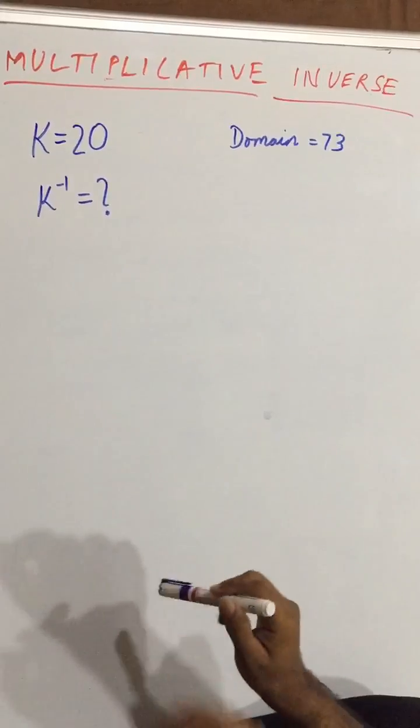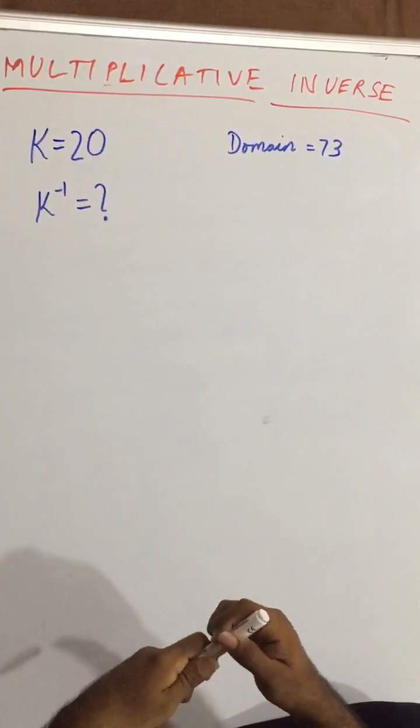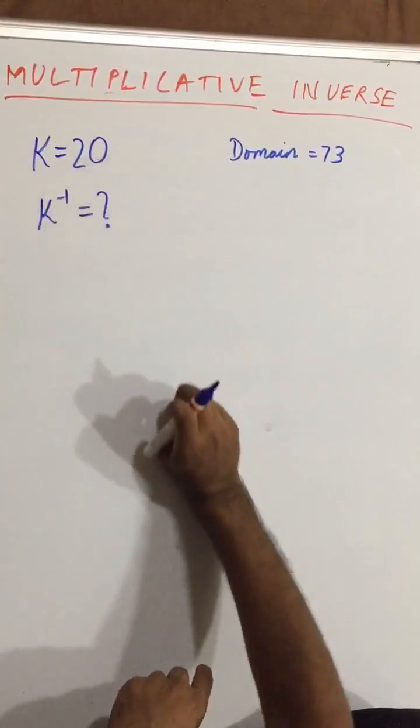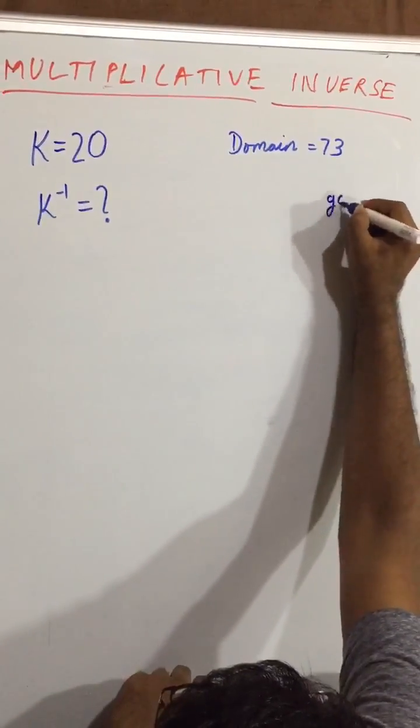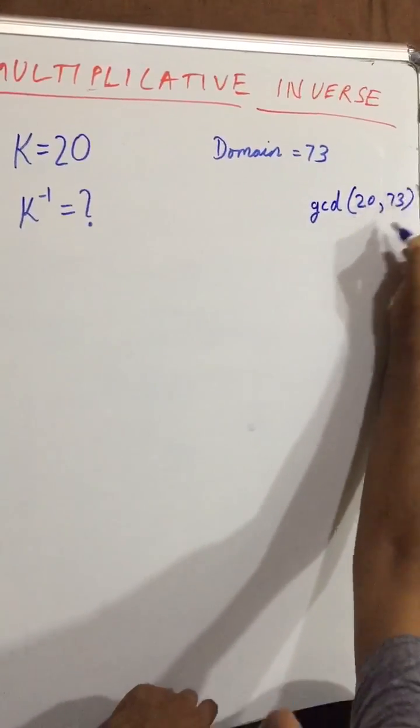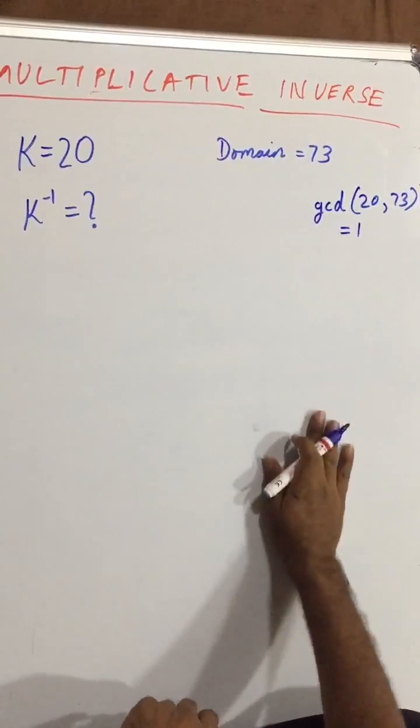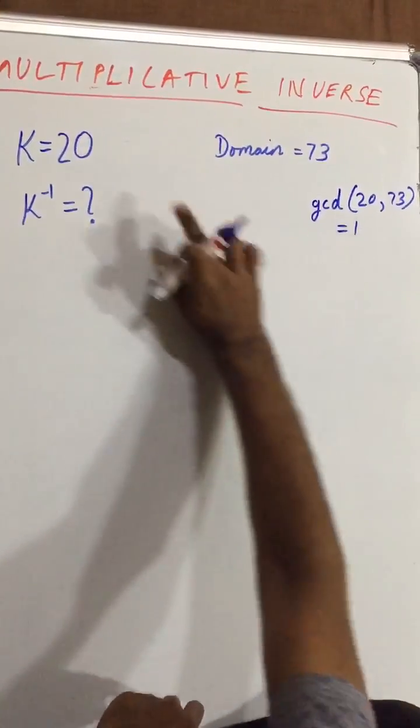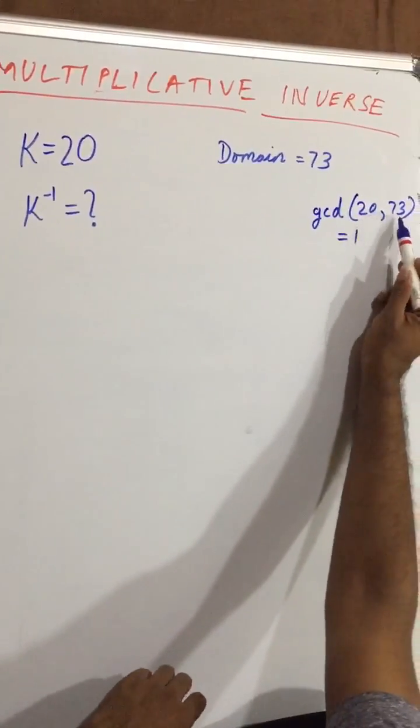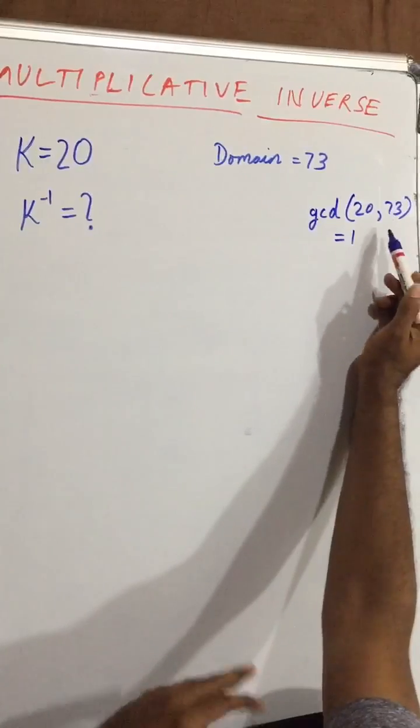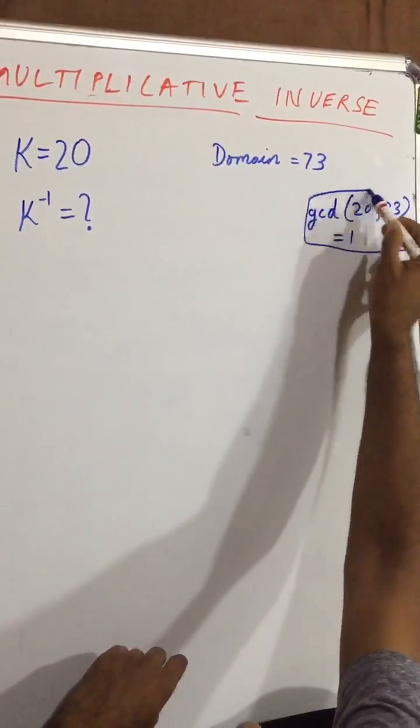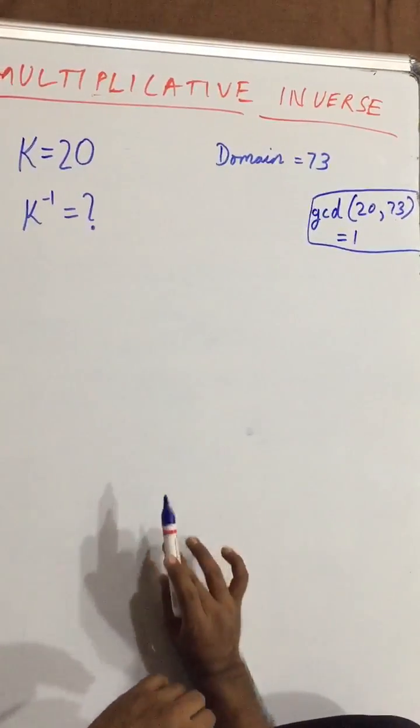What will be the K inverse value? First of all, to check that the inverse of 20 is possible or not, we have to check that gcd of 20 comma 73 is equal to 1 or not. If it is equal to 1, then and only then the K inverse of 20 would be possible. So here for 20 and 73, we know that 73 is a prime number, so obviously the gcd of 20 and 73 would be equal to 1. So in this case multiplicative inverse of 20 is possible.